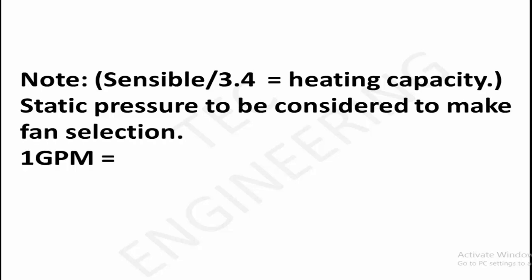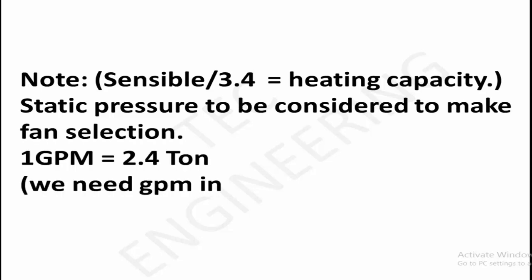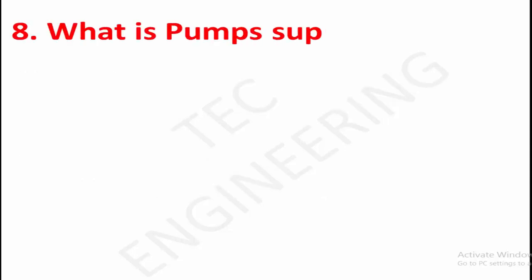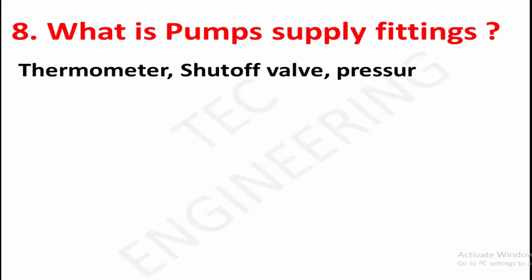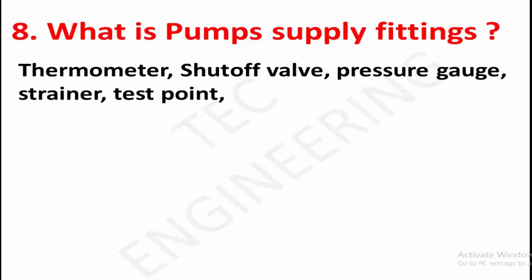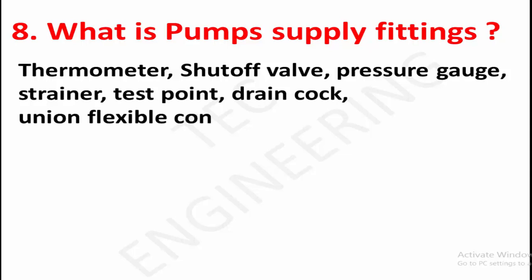1 GPM equals 2.4 ton — GPM is needed for finding pipe size. Pump supply fittings include: thermometer, shut-off valve, pressure gauge, strainer, test point, drain cock, union, flexible connector, and eccentric reducer.